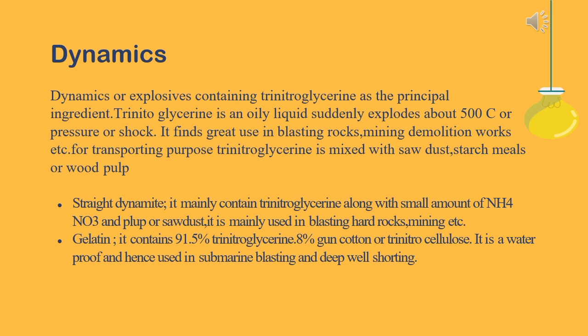Straight dynamite mainly contains nitroglycerin along with a small amount of ammonium nitrate and pulp or sawdust. It is mainly used in blasting hard rocks and mining. Gelatin dynamite contains 91.5% nitroglycerin and 8% gun cotton or trinitrocellulose. It is waterproof and hence used in submarine blasting and deep-hole boring.